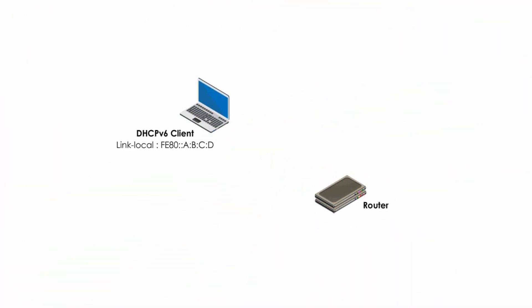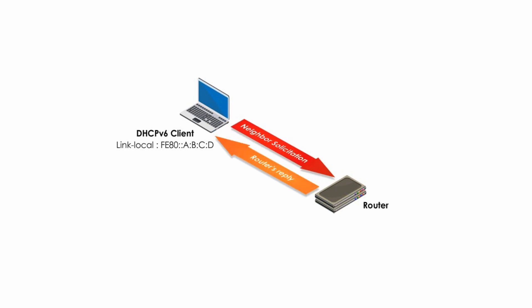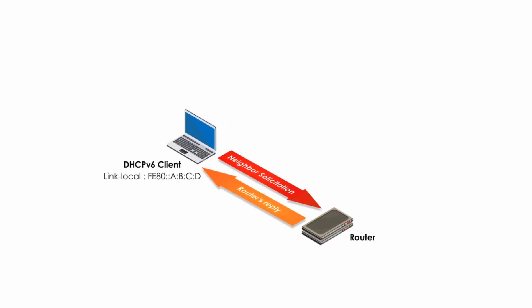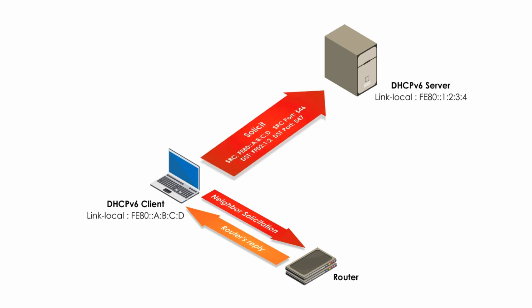Here is one example. Suppose a client on an IPv6 network wants IPv6 addressing information. It sends a neighbor solicitation to a router first, because the router is normally providing addressing information on an IPv6 network. But the router may reply that you need to ask the DHCPv6 server. Then the client sends a Solicit packet to the DHCPv6 server. Please notice the destination address FF02::1:2, which is the reserved multicast address for all DHCP servers and relay agents on an IPv6 local network.